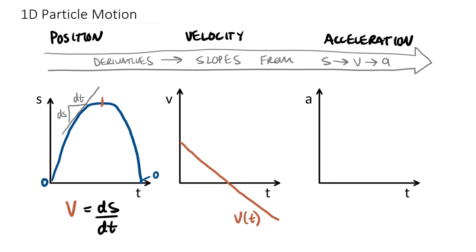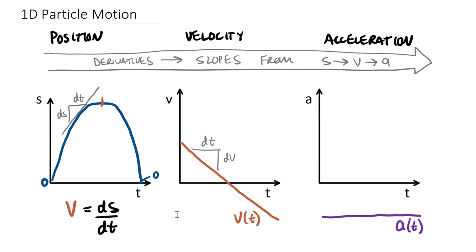The v-versus-t curve also has a slope — rise over run — which we can label dv/dt. This slope is negative all the way across. I tend to use purple for accelerations in dynamics, so here's a purple line: a negative, constant value. This is my a as a function of time graph. It is negative because the slope of v(t) is negative, while the slope of s(t) changed from positive to zero to negative. Acceleration equals dv/dt, the time rate of change of velocity.